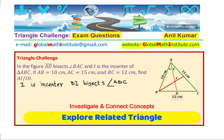That is why we have I as the intersection of two angle bisectors. Now with that, we get two sets of equations.